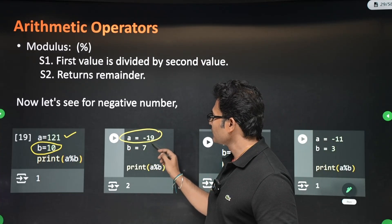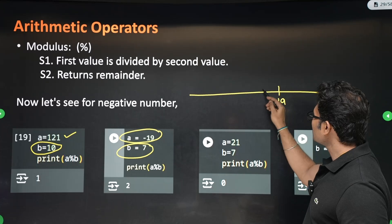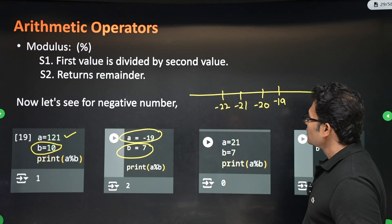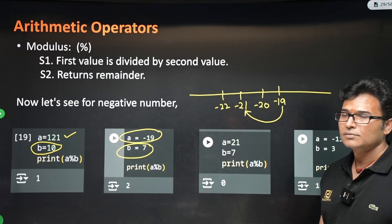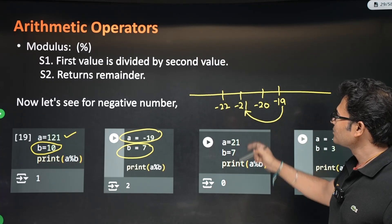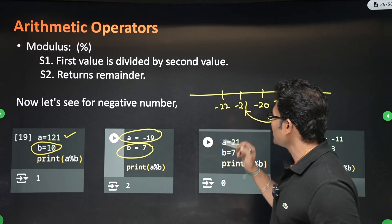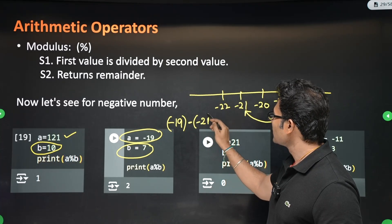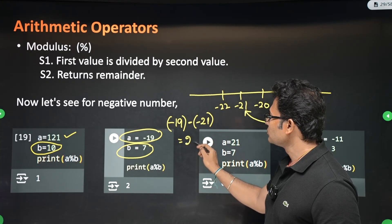For negative numbers: minus 19 modulo 7 — on the number line, minus 19, minus 20, minus 21, minus 22 are there. The largest number less than minus 19 that is a multiple of 7 is minus 21. So we take minus 19 minus (minus 21), which gives minus 19 plus 21, which equals 2.